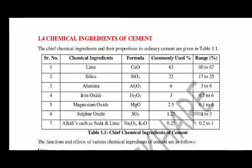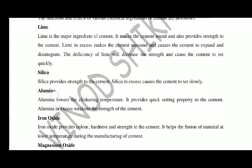The main ingredients of cement are lime, silica, and alumina. The percentage of lime ranges from 60 to 67 percent. The percentage of silica lies between 17 to 25 percent and the percentage of alumina is between 3 to 8 percent. All other ingredients like iron oxide, magnesium oxide, sulfur oxide, and alkaline are present in small percentages.